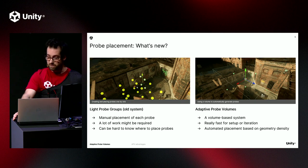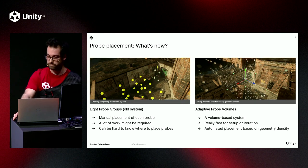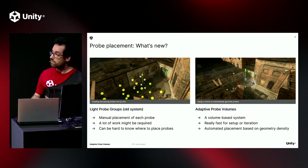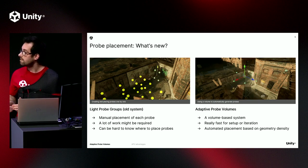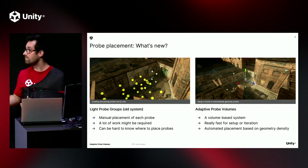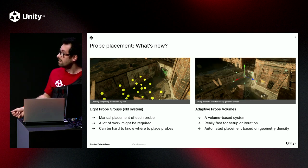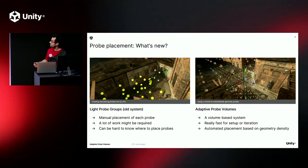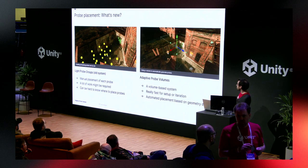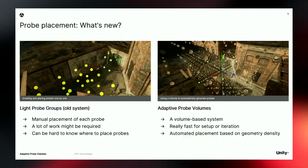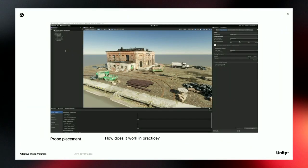Setup and iteration time are very important in a production. With legacy light probe groups, you have to place probes one by one, which can take a huge amount of time to set up. And if you update your scene, you may have more work to do, and it can be quite hard to know where to place probes. APV is a volume-based system, so it's really fast. You just set up a volume and Unity creates probes for you — so much faster. You can set up an APV in your scene in less than a minute.